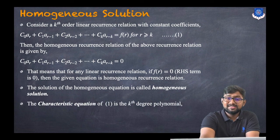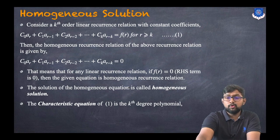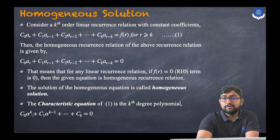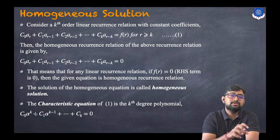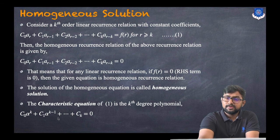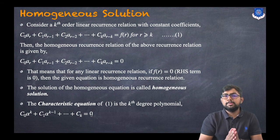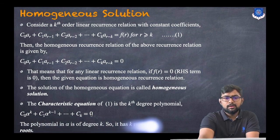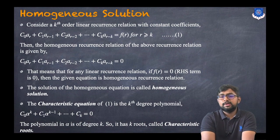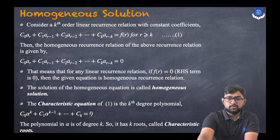The characteristic equation of this k-th order recurrence relation is a k-th degree polynomial given by: c_0 * α^k + c_1 * α^{k-1} + ... + c_k = 0. Since this polynomial in α is of degree k, it has k roots, which are called the characteristic roots.